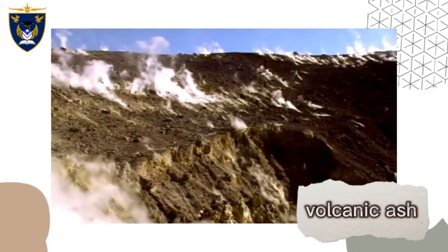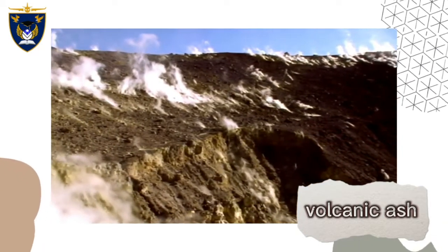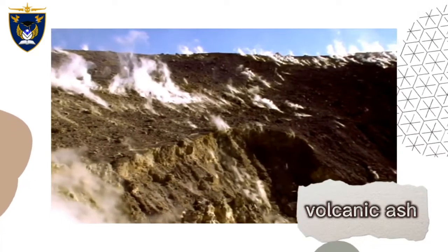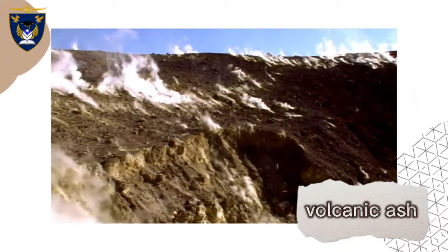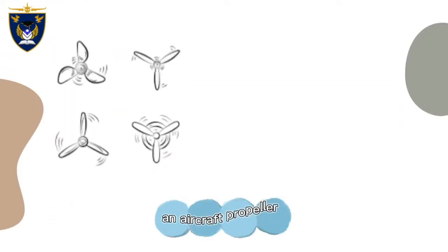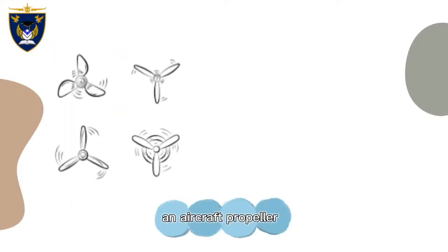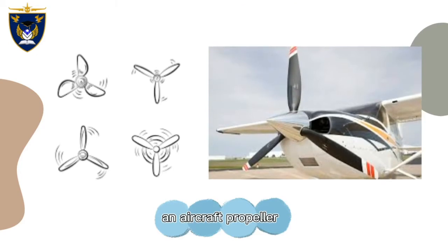Ash can also contaminate the cabin and damage avionics. An aircraft propeller or air screw converts rotary motion from an engine power source to provide propulsive force.